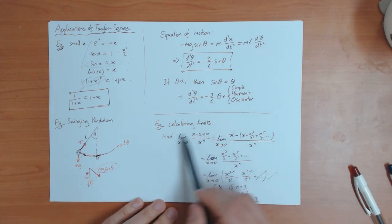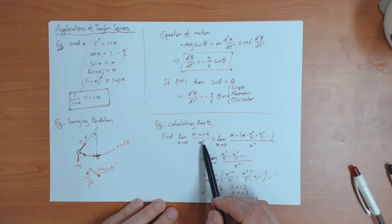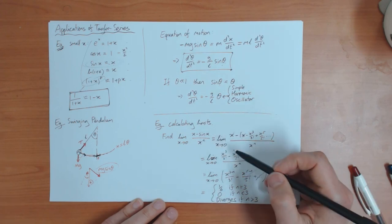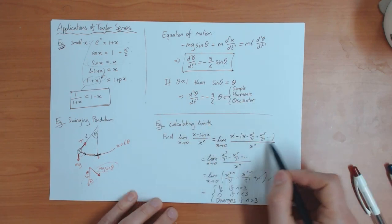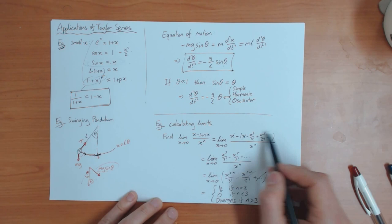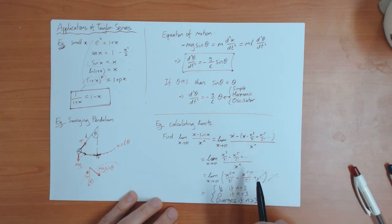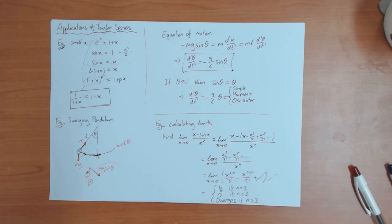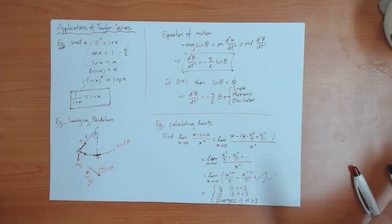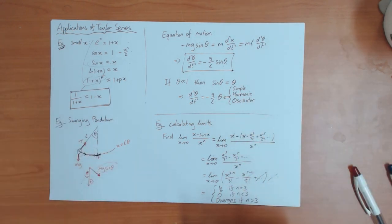So therefore, the limit of this function as x goes to zero depends upon the value of n. If n is 3, it's equal to a sixth. If n is less than 3, it's equal to zero. And if n is greater than 3, it diverges. So it goes to plus or minus infinity. And the way we work this out is by expanding sine x as a Taylor series and taking the first term that does not cancel. So one of the questions on the practice sheet this week is like this too. So that's all I wanted to say in this video. Just a few examples of how Taylor series are used in physics and how they are used to calculate limits.